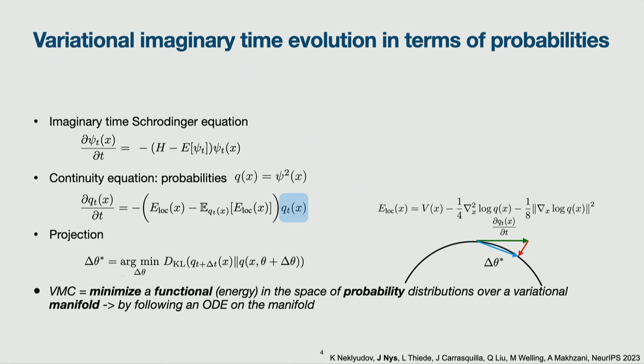Since we're working with a restricted variational manifold, we project back onto it by optimizing a KL divergence — the green arrow back onto the manifold — obtaining a new set of parameters with better energy. VMC can be reformulated as minimizing an energy functional in the space of probability distributions over a variational manifold. This is a useful way to communicate with pure machine learning researchers: we're following an ODE for probabilities while minimizing this functional.